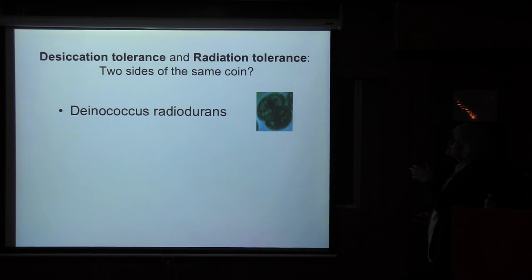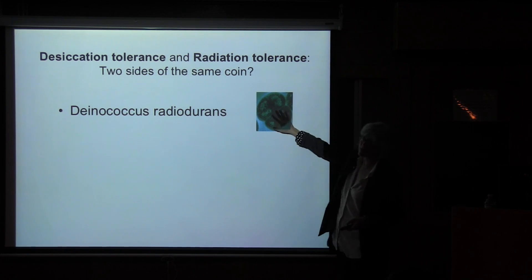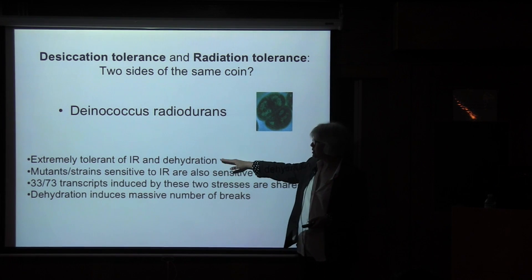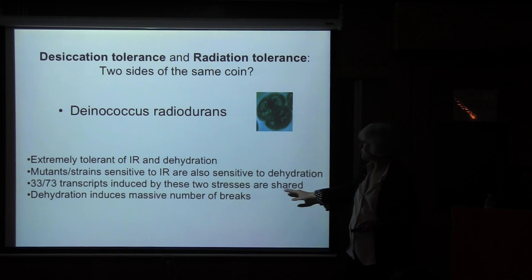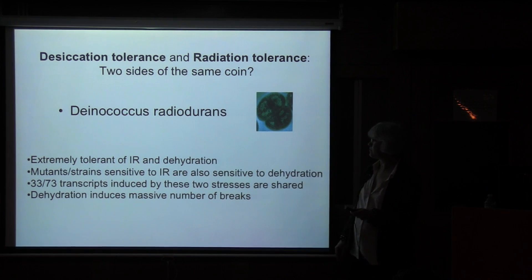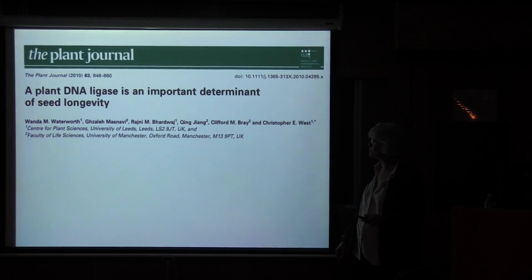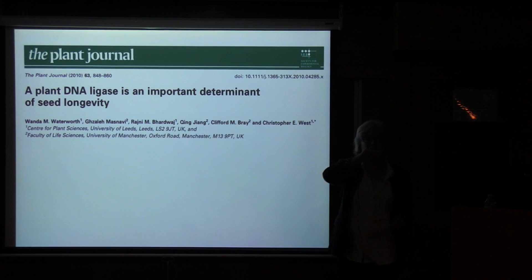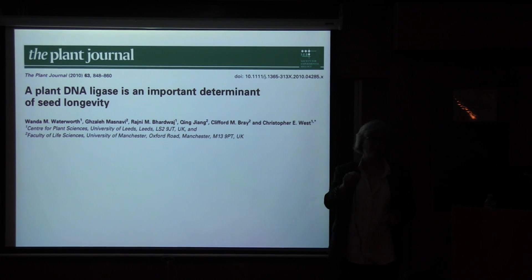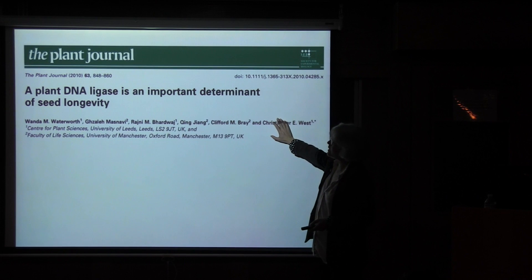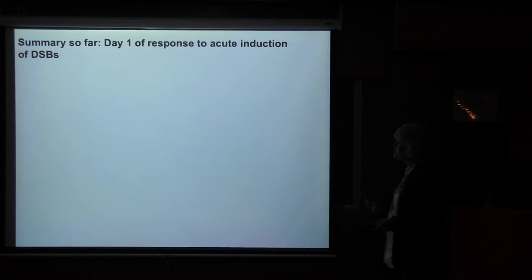Desiccation tolerance and radiation tolerance seem to be two sides of the same coin. There's a famous organism that's extremely radiation resistant and also extremely desiccation resistant — mutants sensitive to radiation are also sensitive to dehydration. Transcriptomics shows the two stresses induce the same things, and dehydration indeed induces massive amounts of breaks. Chris West and Wanda Waterworth have shown that as the Arabidopsis seed is germinating, there's a one or two hour window during imbibition at which you see the induction of this response and then it goes away again. DNA ligase 4 is important for seed longevity — that's probably what this elaborate response is really all about.